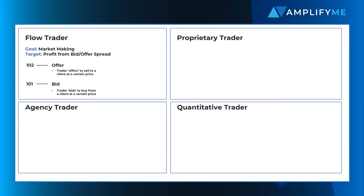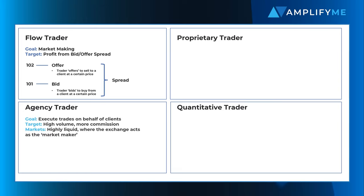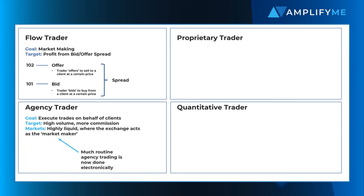Flow traders make money off the spread between bid and offer. The tighter the spread, the more chance of winning business; however, a tight spread is less profitable for the trader and the bank. Agency traders, also known as sales traders, execute trades on behalf of their clients. They are not market makers and they often operate in highly liquid markets, for example major currency markets where there is no need for a market maker.